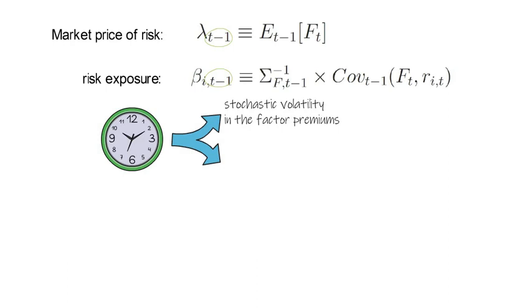So you see that the time variation in the beta arises from either stochastic volatility in the factor premiums, which is the sigma f, and or from a time varying correlation between asset I and the factor premiums.